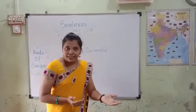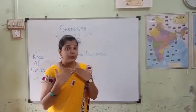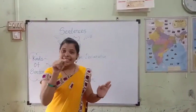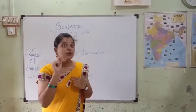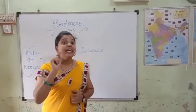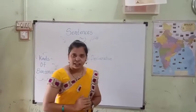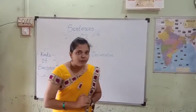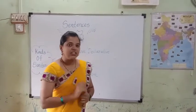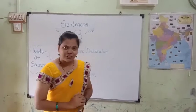Instead of that, if I use 'Today I am not going to school' — in this sentence I have used 'not,' and because of that, this sentence is known as a negative declarative sentence. Understood, children? The structure of assertive or declarative sentence is subject plus verb plus object.